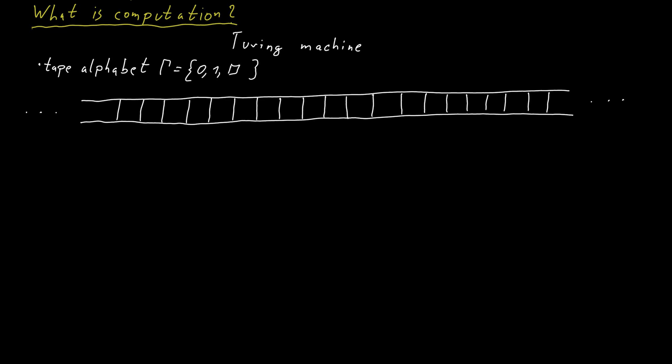But in principle, our tape alphabet could also contain additional characters. The tape is a bit like the main memory of a computer. This is the place where we can store all our information.